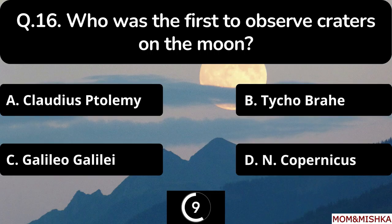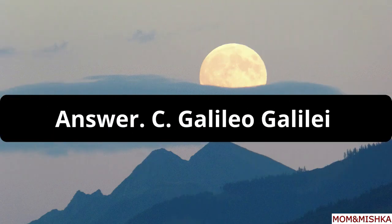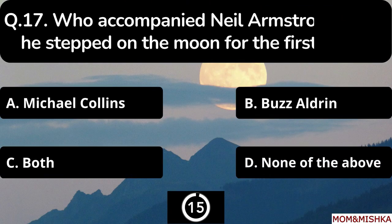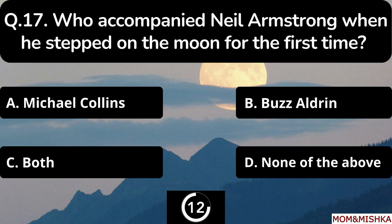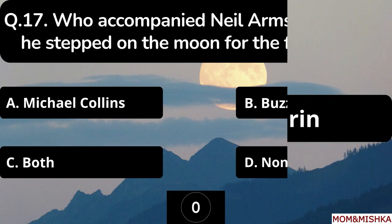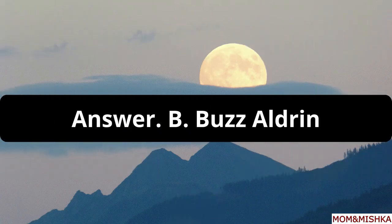Who was the first to observe craters on the moon? The answer is option C: Galileo Galilei. Who accompanied Neil Armstrong when he stepped on the moon for the first time? Option B: Buzz Aldrin.